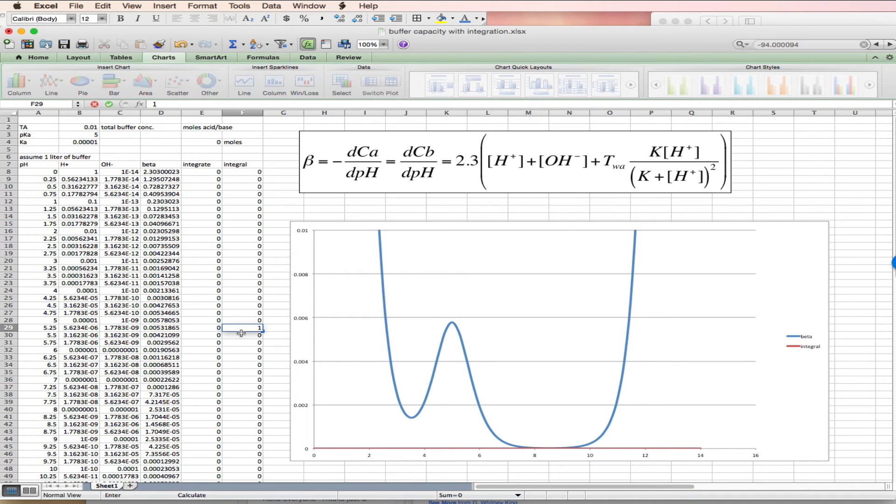I've just set this up so I put a 1 in here and the red line showing up here is the amount of moles of concentrated base that I would need to add. So if I want to go from 5 to 5.25, I would need to add 1.3 millimoles of base.